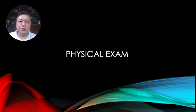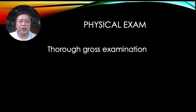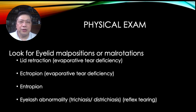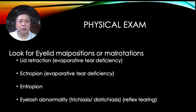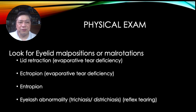After talking with your patient and narrowing down the problems, it's time to examine the patient. You need to do a thorough gross examination — this is one area where you can examine the patient even without special equipment. Try to look for eyelid malpositions and malrotations. Is the eyelid flat against the eye? Lid retraction — where the eyelids cannot close or are too high — causes problems with evaporation because the eyelids don't close, so tears evaporate very fast, and your lacrimal pump is also compromised.